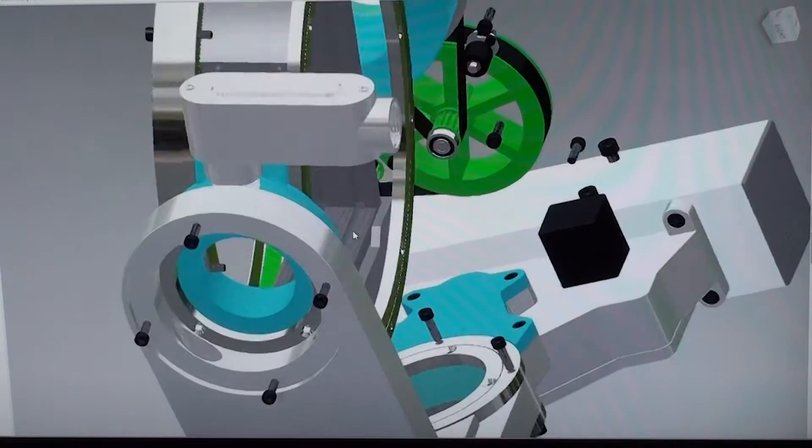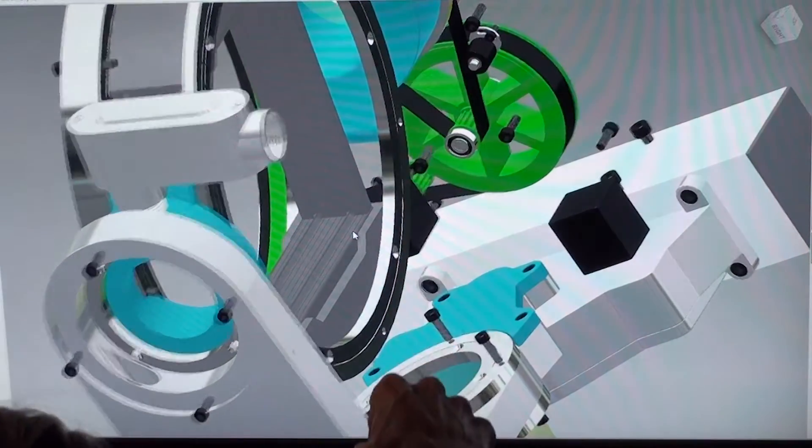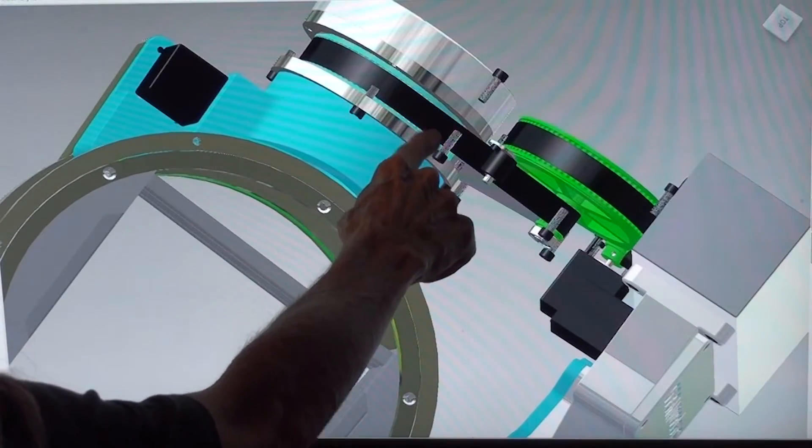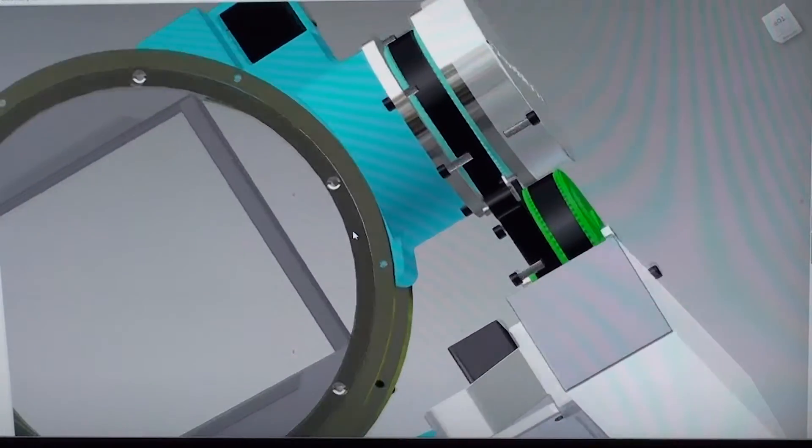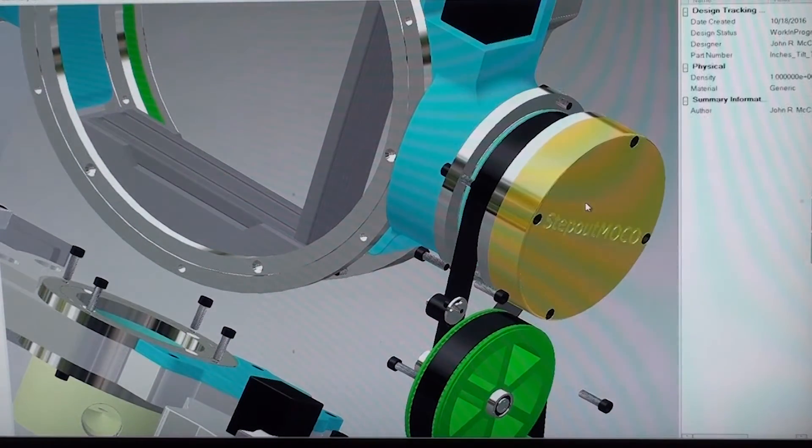This second stage pulley is an integral piece with this pulley. And then it outputs to this large diameter pulley here. And again there's large diameter bearings.